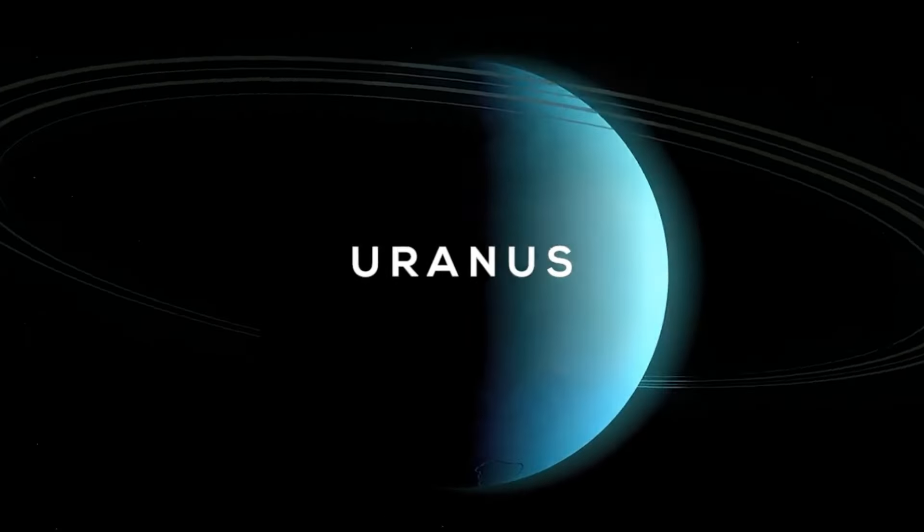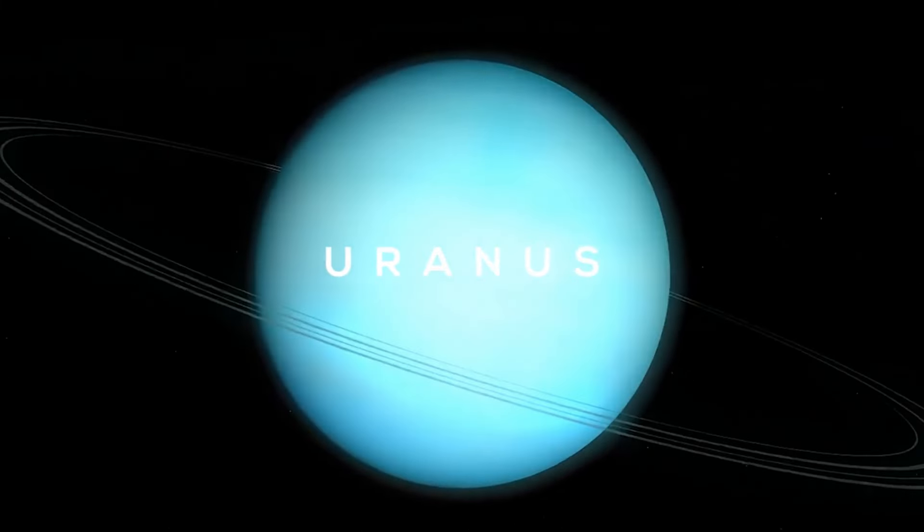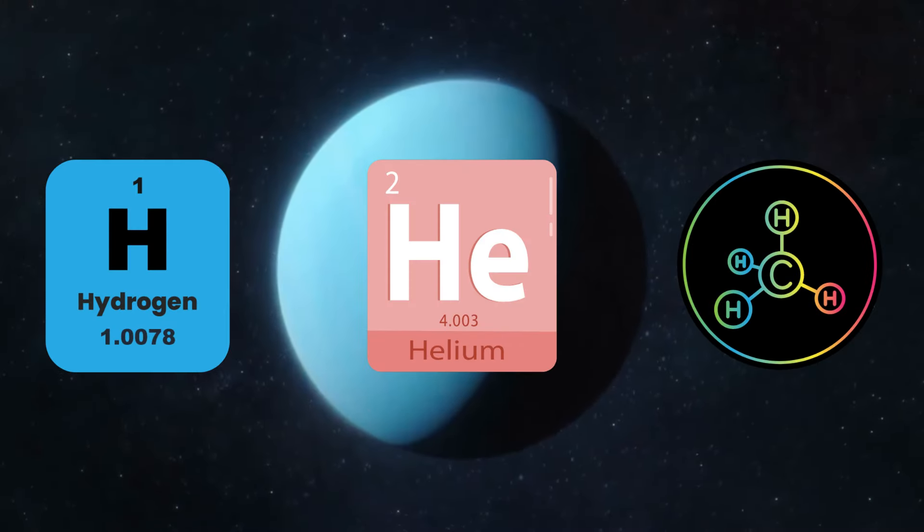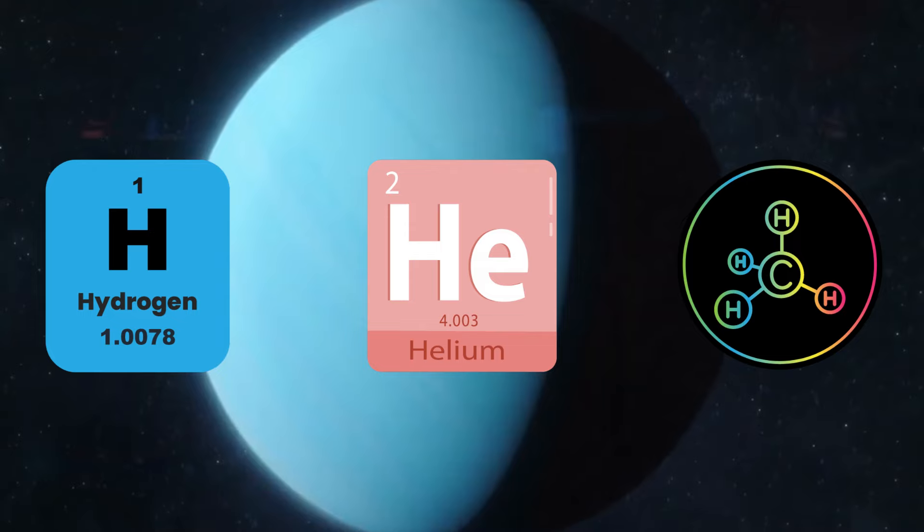The gassy atmosphere of Uranus is primarily made up of hydrogen, helium, and methane. The higher altitudes would be the smelliest, thanks to the pungent, rotten egg smell of hydrogen sulfide.